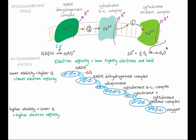In the last step of the chain, electrons are passed to oxygen. An oxygen atom from O2 gas gains two electrons and combines with two hydrogen ions to form water. Oxygen has the highest electron affinity, so electrons only move toward oxygen and never back to cytochrome oxidase.